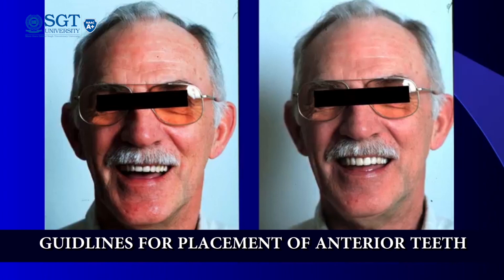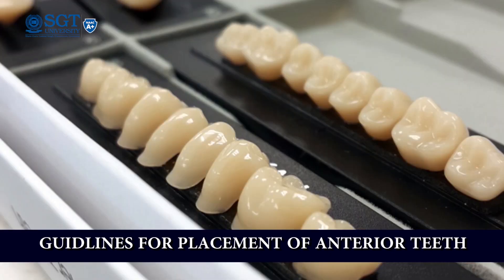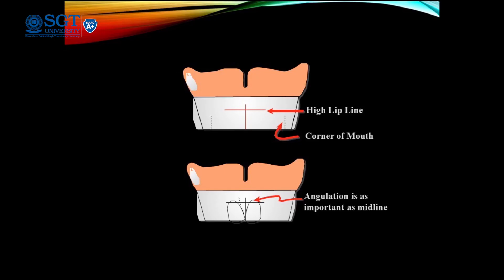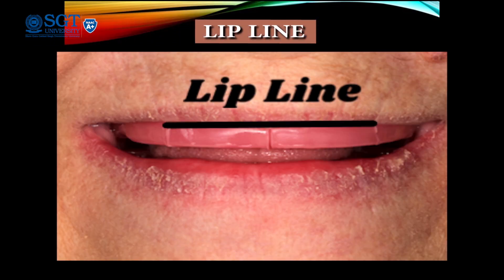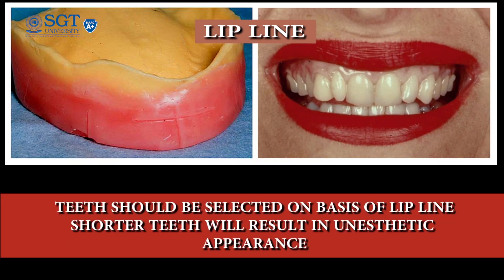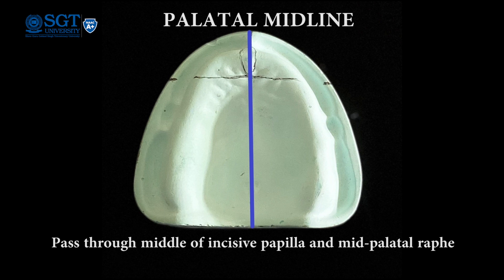There are certain anatomical landmarks and references which are used to position the artificial teeth on your occlusal rim. First is the lip line, which is the highest point of the upper lip when smiling. The cervical neck of the artificial teeth should lie at or above this line. If shorter teeth are selected, then the aesthetics are compromised. Second is the palatal midline, which extends through the midline of the incisive papilla and the mid-palatin raphe. It is used to check for symmetry.